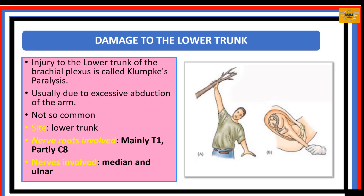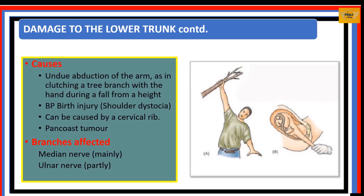Next, we look at damage to the lower trunk, which can result from excessive abduction of the arm. When this trunk is damaged, the paralysis is called Klumpke's paralysis. Causes include undue abduction of the arm as in clutching a tree branch during a fall from height, shoulder distortion during difficult delivery, presence of a cervical rib, and Pancoast tumor.